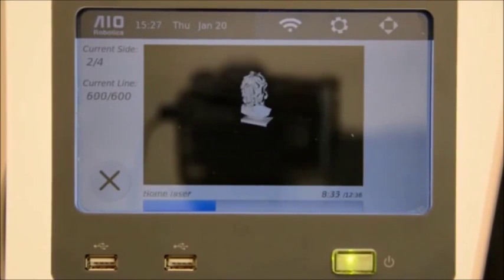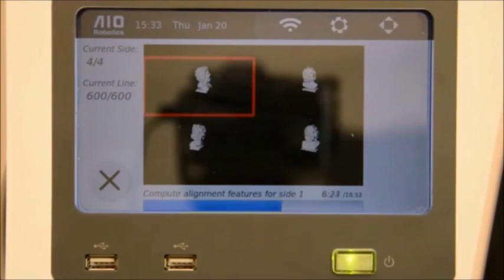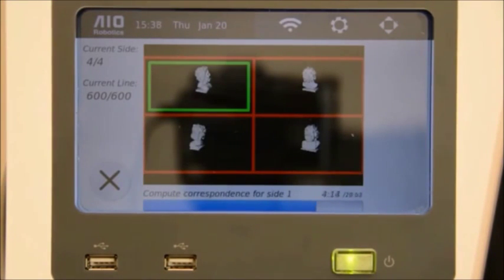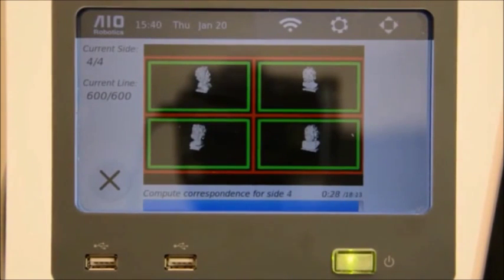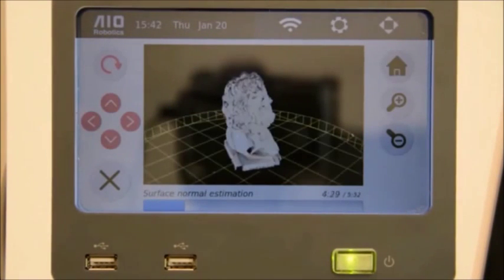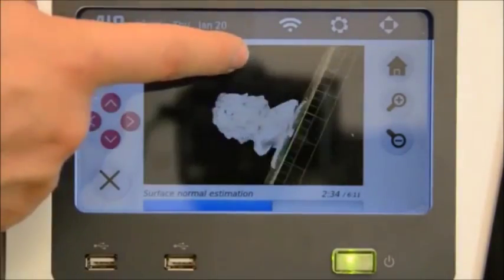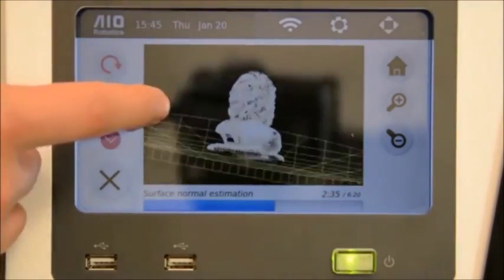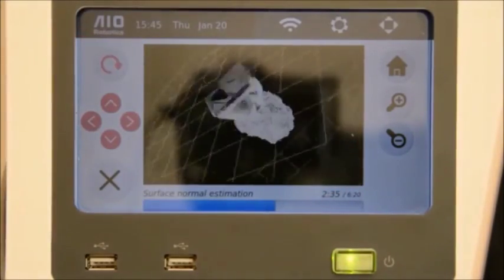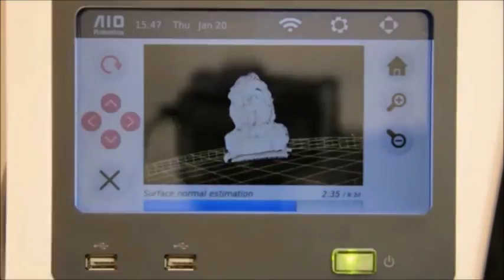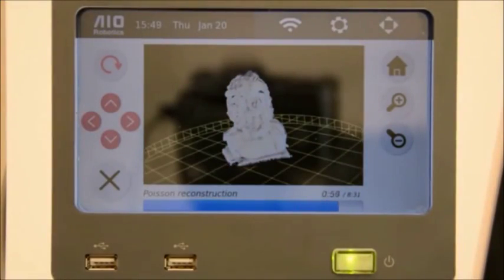And once all four sides got scanned, the SUSE will automatically stitch together these four individual scans and merge them to one point cloud. You can look at this point cloud from all kinds of angles. And in the next step, this point cloud will automatically be converted into an STL file into a 3D model.